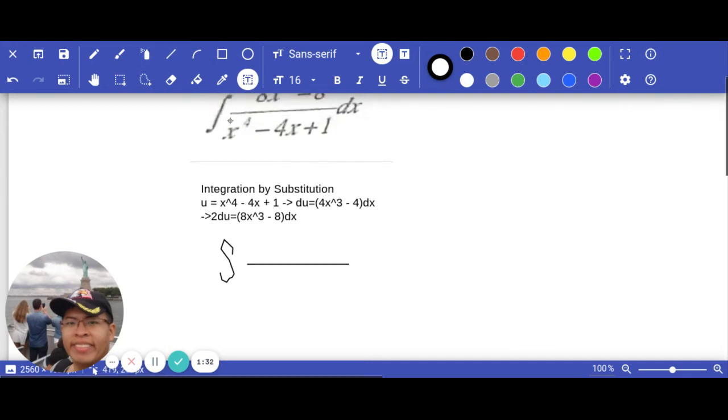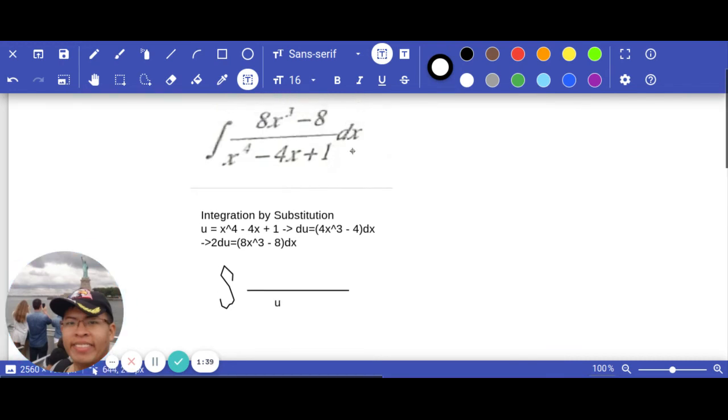On the denominator we have u, and on the numerator we transform to du.